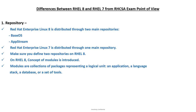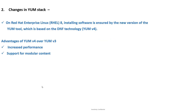On RHEL7, there was only one main repository. The second difference is changes in the YUM stack. In RHEL7, YUM version 3 was used. In RHEL8, YUM version 4 is used, which is based on DNF technology. The advantages of YUM version 4 over version 3 include increased performance and support for modular content.